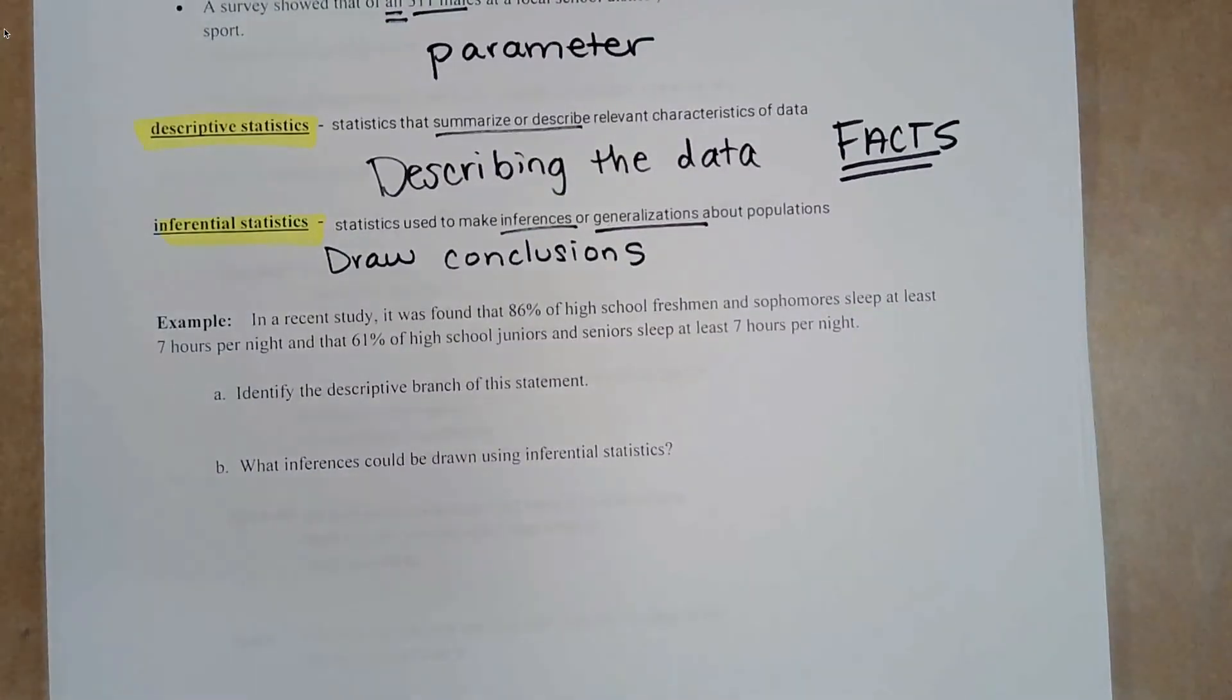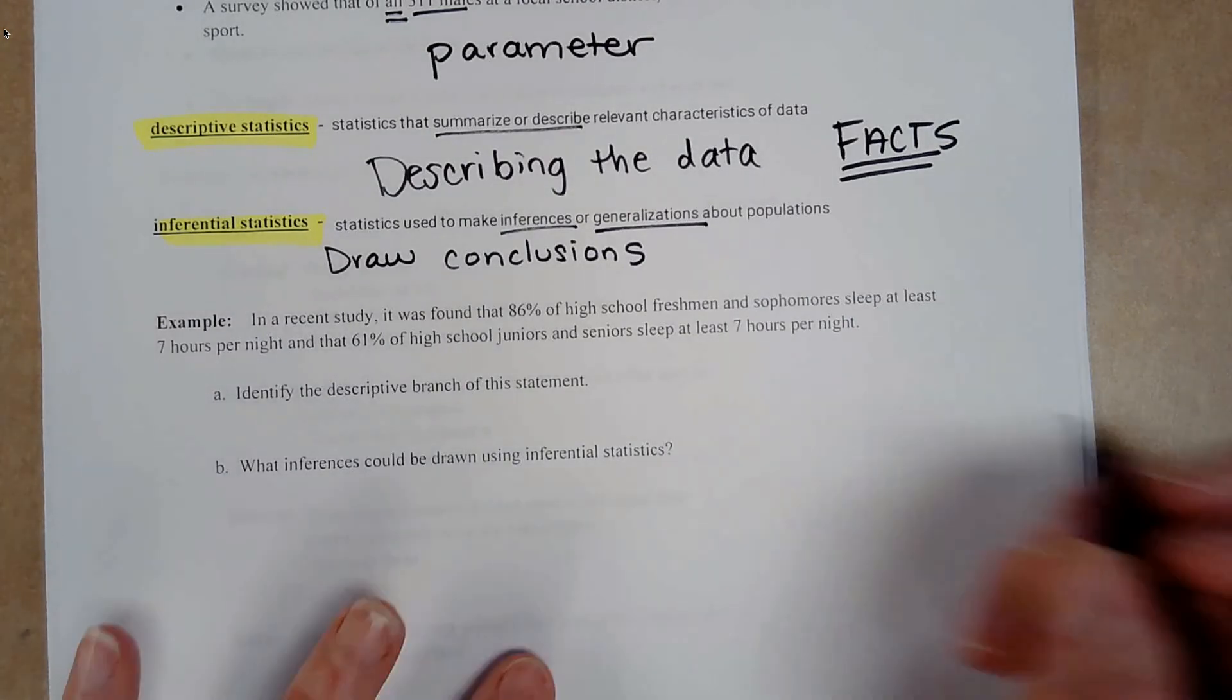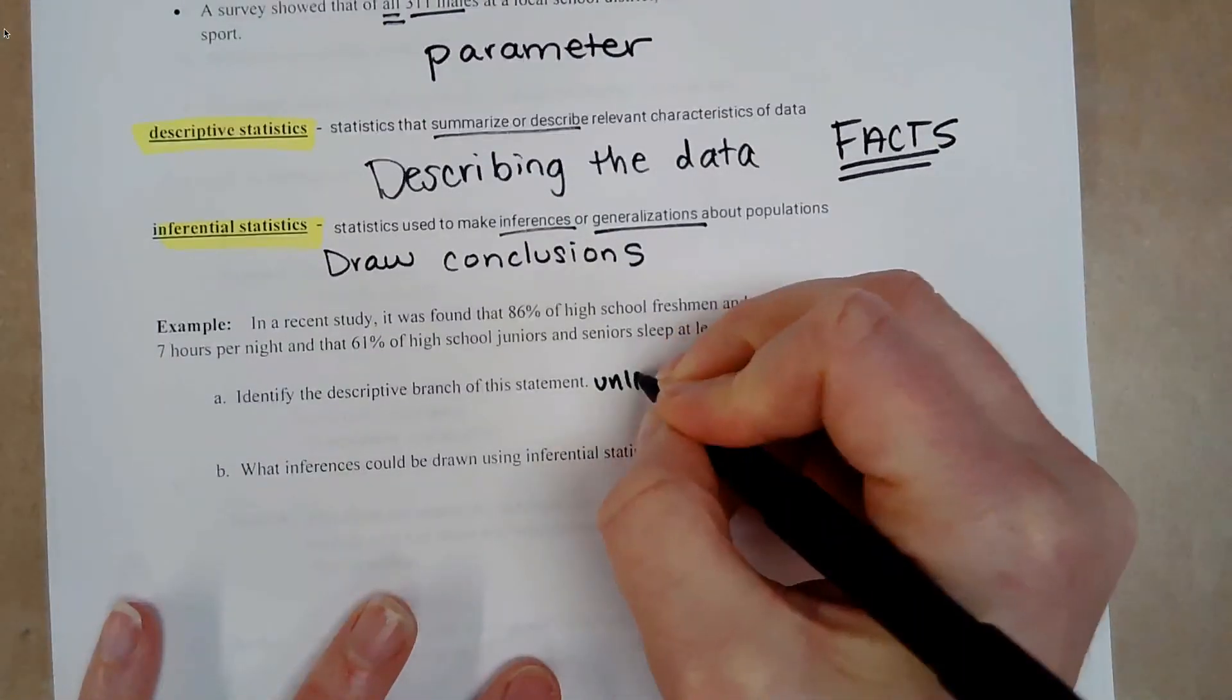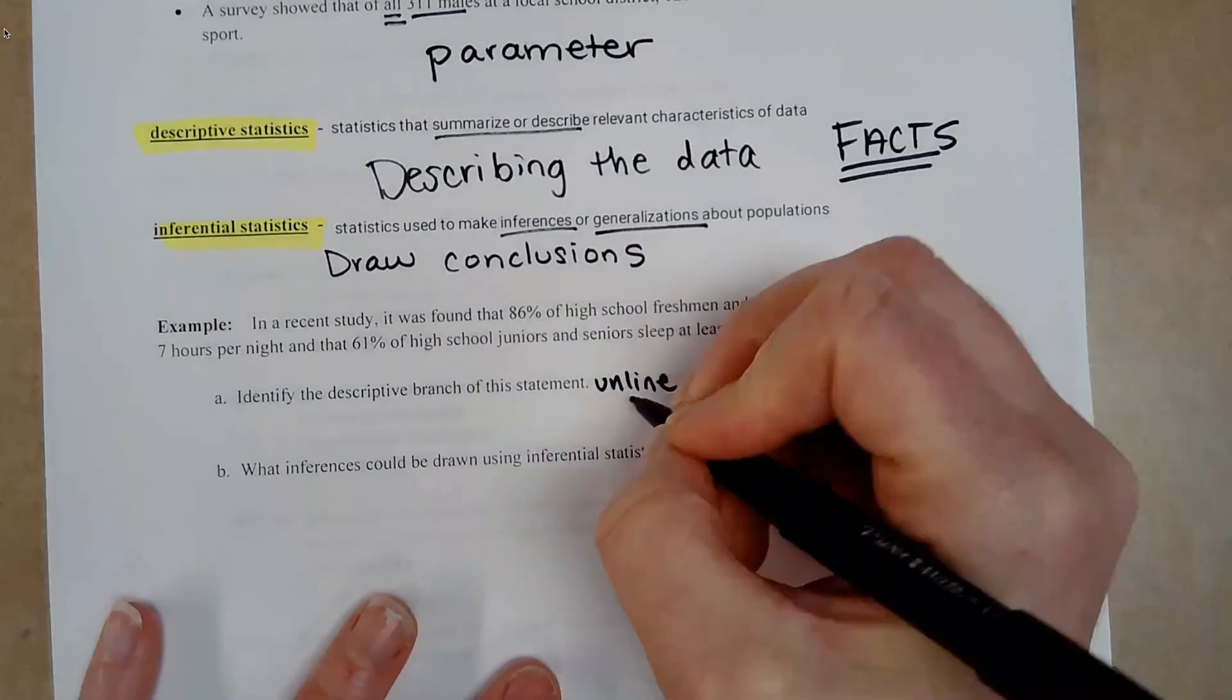Example. In a recent study, it was found that 86% of high school freshmen, sophomores, sleep at least seven hours per night. And that 61% of high school juniors and seniors sleep at least seven hours per night. Identify the descriptive branch of the statement. We're actually just going to underline. Underline.